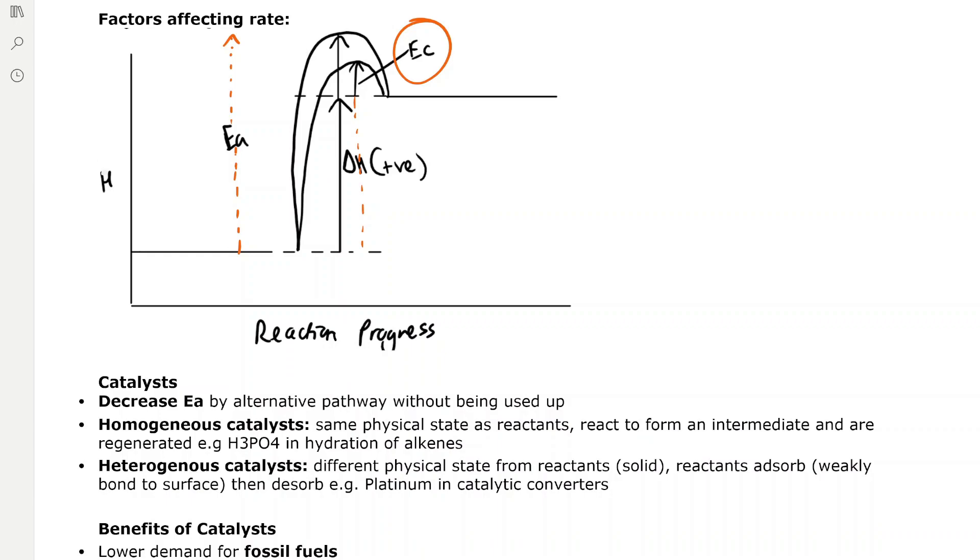There are some important factors affecting the rate of reaction. We've got catalysts, so as you can see in this diagram, the activation energy in the presence of a catalyst is decreased, because catalysts find an alternative reaction pathway without themselves being used up.